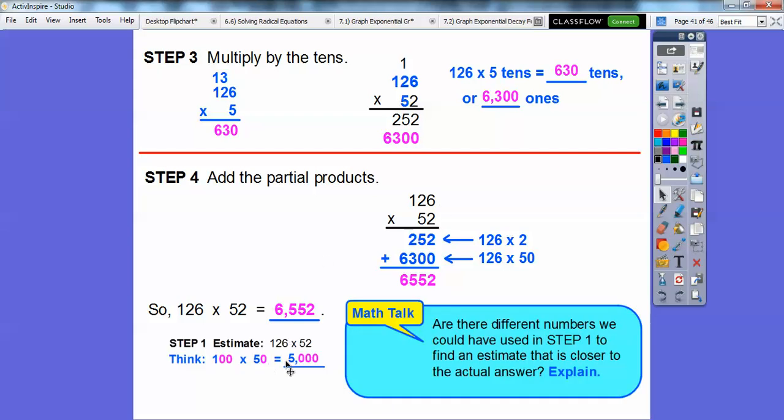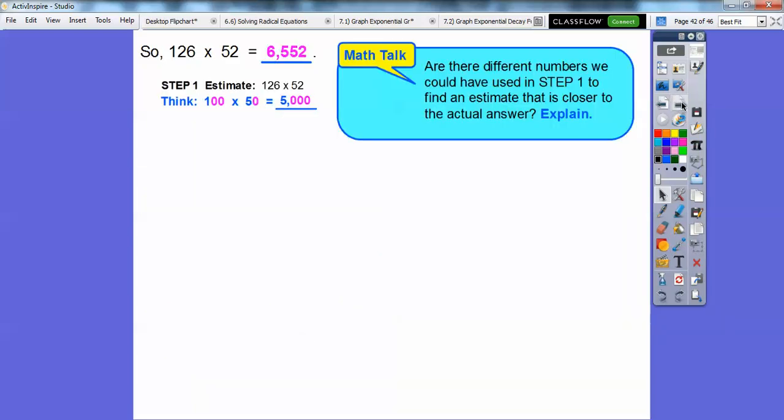So here's our estimate of 5,000 right there. Were there different kind of numbers we could have used in this step right here to find an estimate that's closer to the actual number? Because this is 1,552 off of 5,000 right here. So let me slide that up right there.